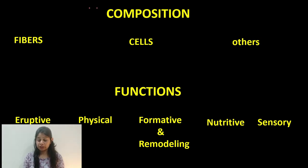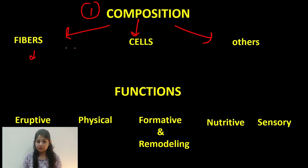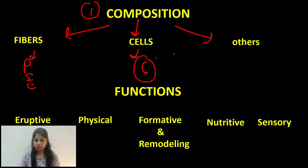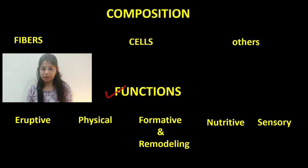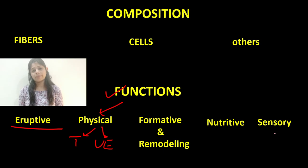To summarize, we covered two aspects. First, the composition of the periodontal ligament: fibers (principal, Sharpey, and elastic fibers discussed in the previous broadcast), a set of six cells associated with the periodontal ligament, and other substances including blood vessels, lymphatics, and nerve supply. Second, we discussed the functions: the eruptive function, the physical function (tensional and viscoelastic theories), the formative and remodeling function, the nutritive function, and the sensory function with four types of receptors.